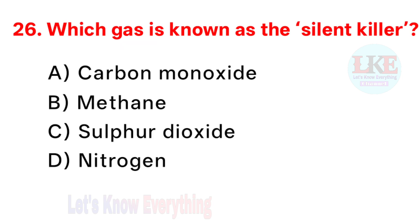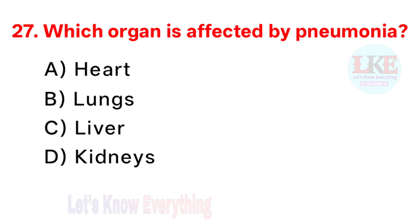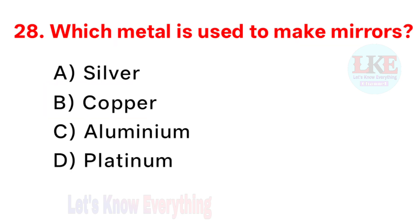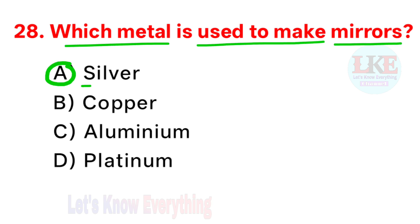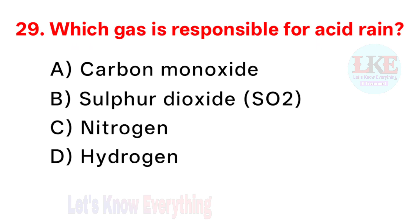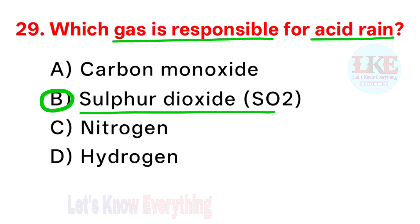Question number 26: which gas is known as the silent killer? Right answer option A: carbon monoxide. Question number 27: which organ is affected by pneumonia? Right answer option B: lungs. Question number 28: which metal is used to make mirrors? Right answer option A: silver. Question number 29: which gas is responsible for acid rain? Right answer option B: sulphur dioxide, SO2.